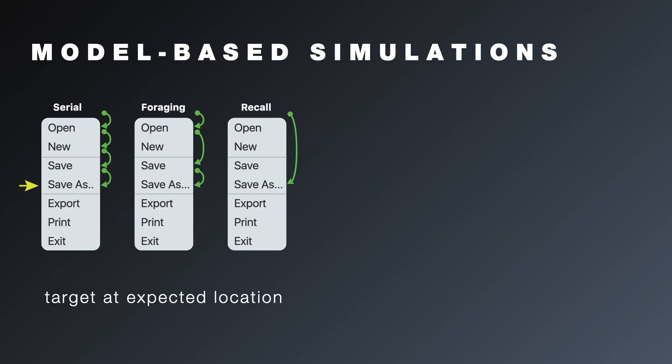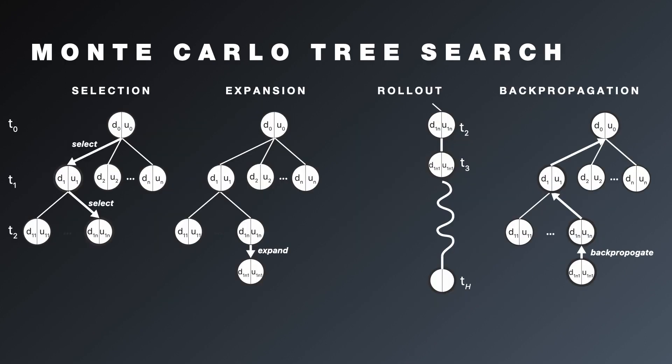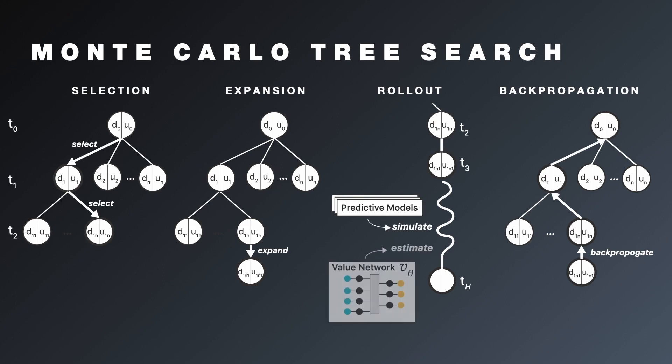In the example of menus, these models can be used to simulate how the user would search for an item, and how an adaptation might affect the search process. These predictive models can then be used by a planning algorithm like Monte Carlo TreeSearch to efficiently find adaptations. To speed up computations, we can also use pre-trained neural networks to obtain value estimates.